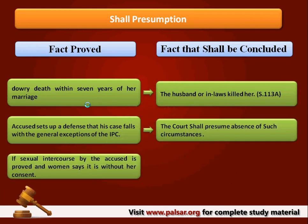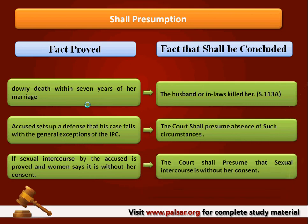Another important and landmark amendment: if there is proof of sexual intercourse and the woman says there was no consent, the court shall presume that the sexual intercourse is without her consent. Thus, upon proof of one fact, the court jumps to another conclusion. In some cases it has a choice — if it is a choice, it is a May Presumption; if there is no choice and it is an obligation upon the court, it is called mandatory, and it is called Shall Presumption.